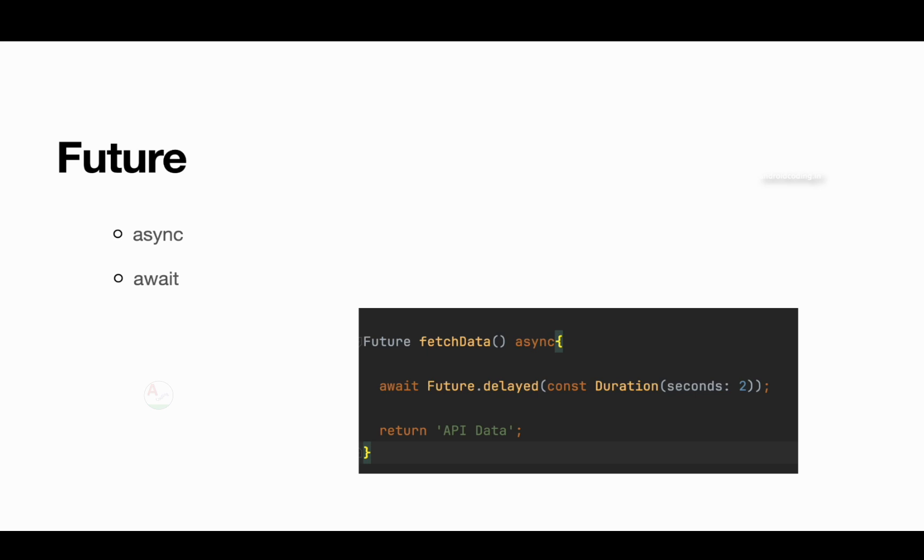This is how asynchronous programming is handled in a Flutter application. We also have Future.wait — let's see how to implement it. Imagine a scenario where you want to make multiple network calls, not a chain but parallel calls. You start all these network calls and wait for all their results, then proceed further. There are scenarios in applications where this kind of parallel API call is needed, and for those, Future.wait provides the best solution.